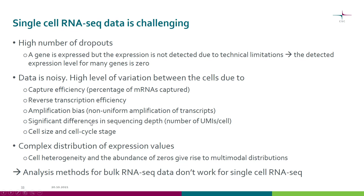There can be big differences in the total number of UMIs per cell — we call this sequencing depth differences. There can also be biological reasons affecting the results, such as cell size and cell cycle stage. So the distributions of expression values we get are very complex; we don't get nice normal distributions but typically get multimodal distributions.